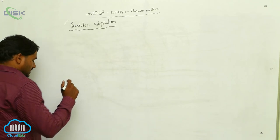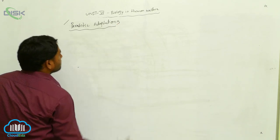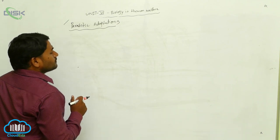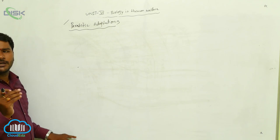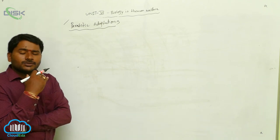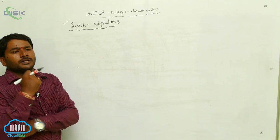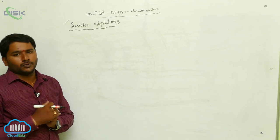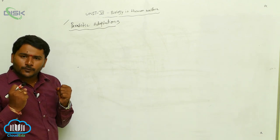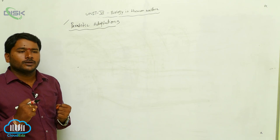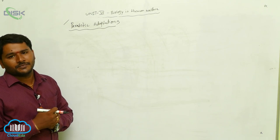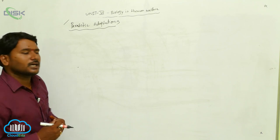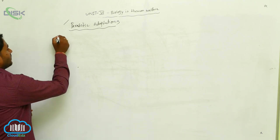Parasitic adaptations. Generally, the parasite shows different types of adaptations because the host environment is not suitable for the parasite. So the parasite shows some adaptations or developments to tide over the conditions in the host. In order to bear the host environment, the parasite shows adaptations. Let's see one by one.